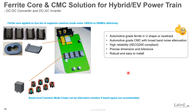This is a showcase for a very hot application — powertrain for EV and hybrid EV — DC-DC converters and DC-AC inverters, very high-power applications. Ferrite cores in U-shape or racetrack shape are very good when applied on bus bars to suppress common mode noise from 100 kHz up to about 300 MHz. These are automotive-grade AEC-Q200 compliant components that help tackle the EMI problem in this frequency range.